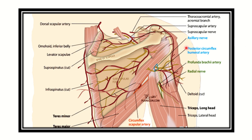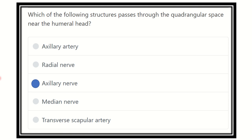So our answer will be the axillary nerve or posterior circumflex humeral artery. We can also see the triangular space bounded above by teres major and on either side by the long head and lateral head of triceps. Our final answer is the axillary nerve, as it passes through the quadrangular space near the humeral head along with the posterior circumflex humeral artery.